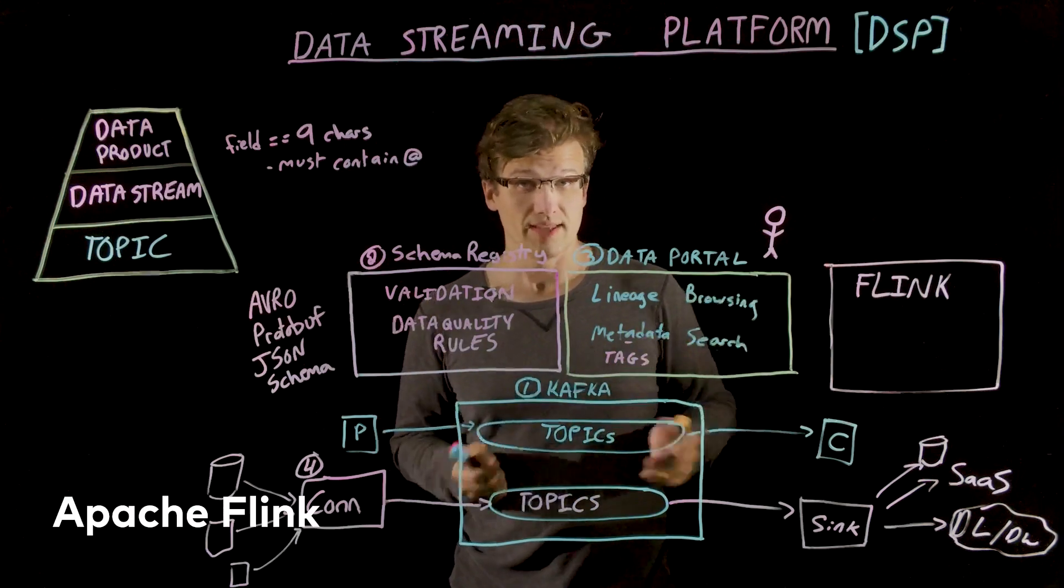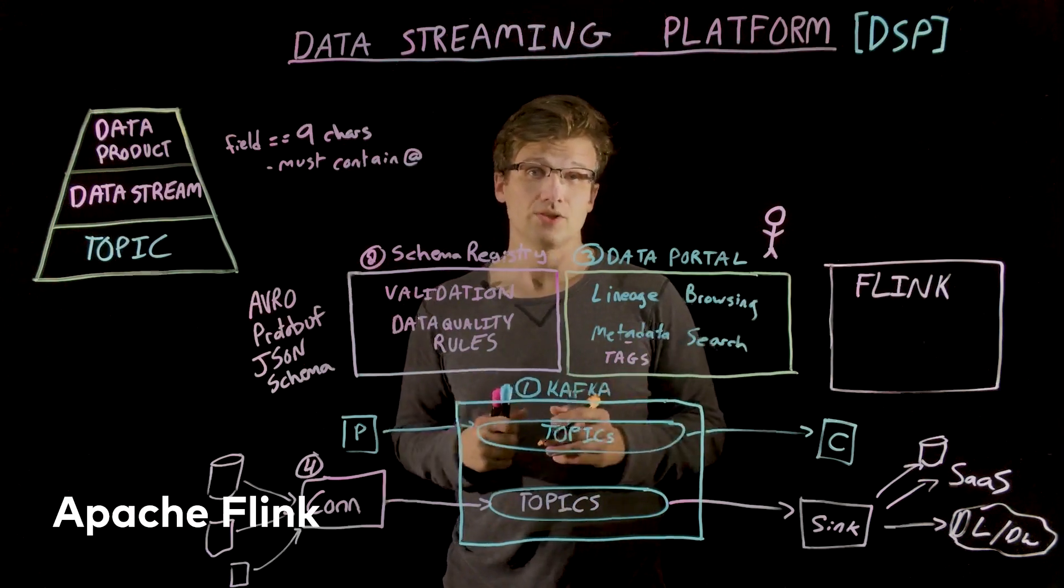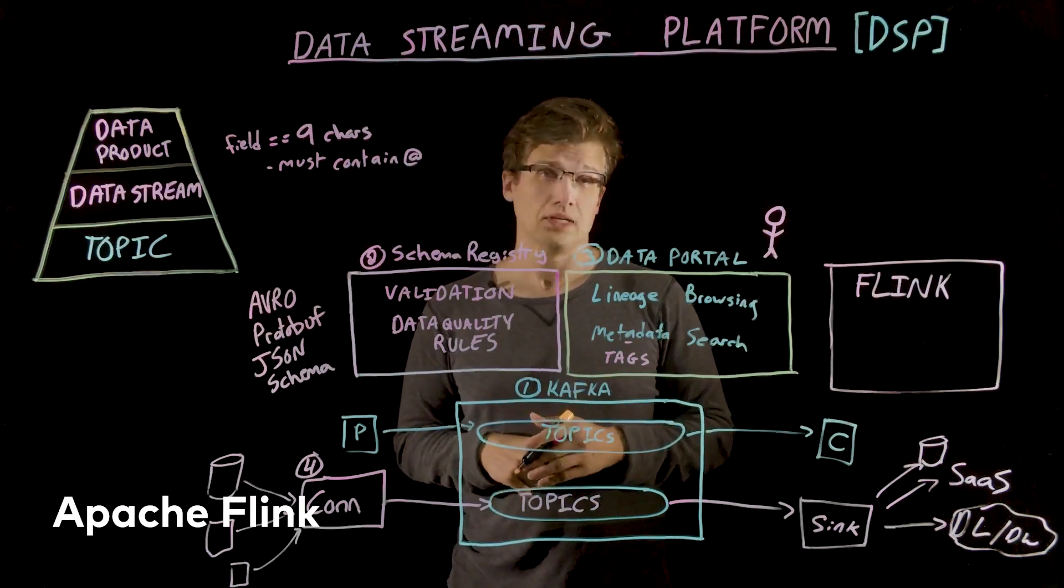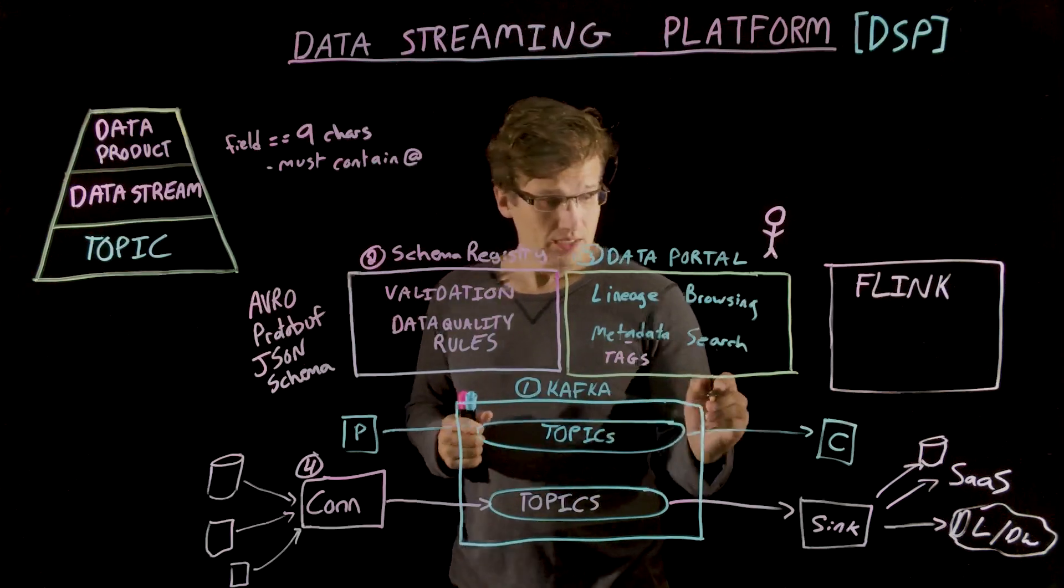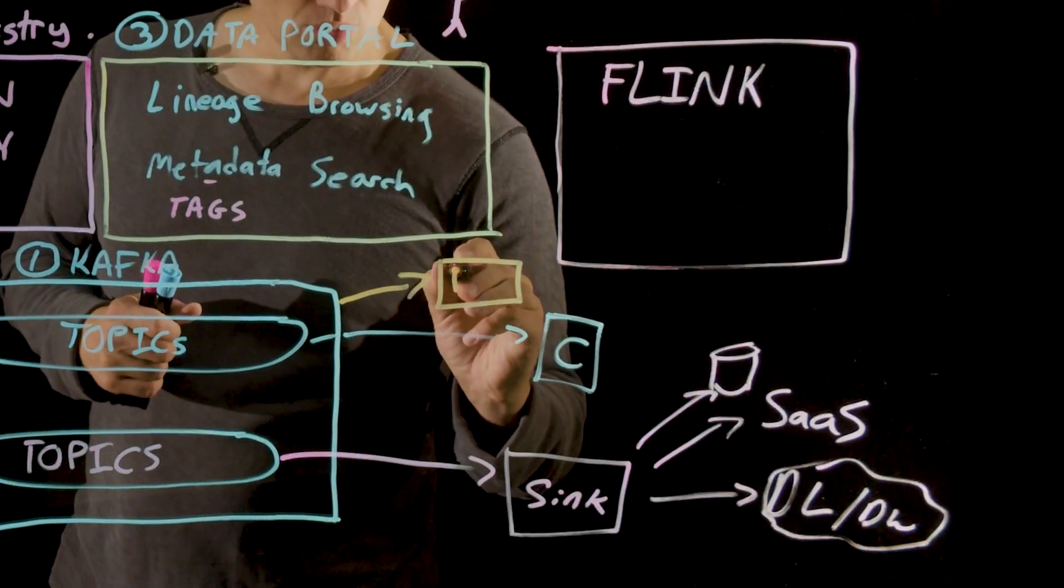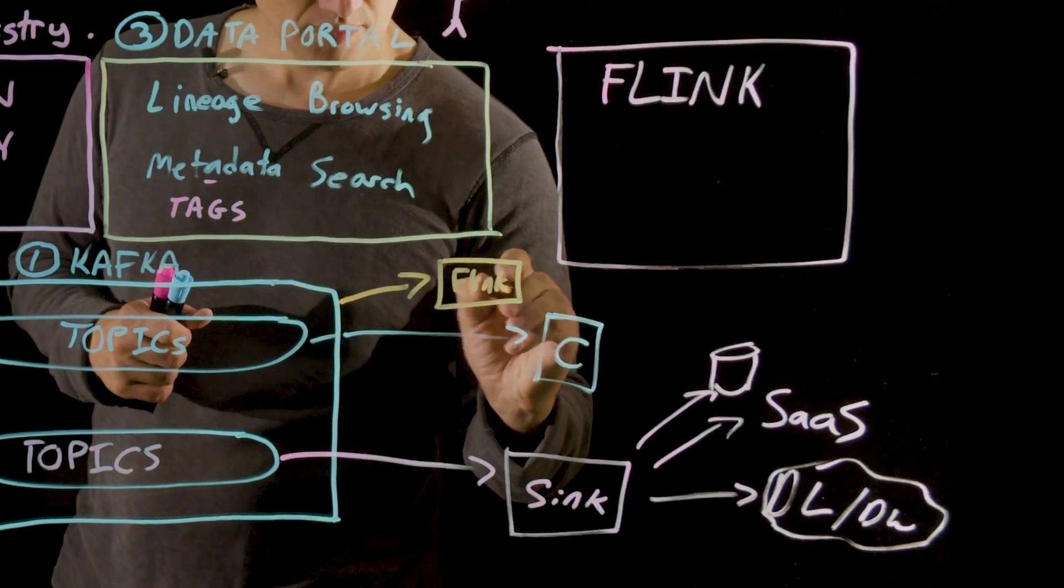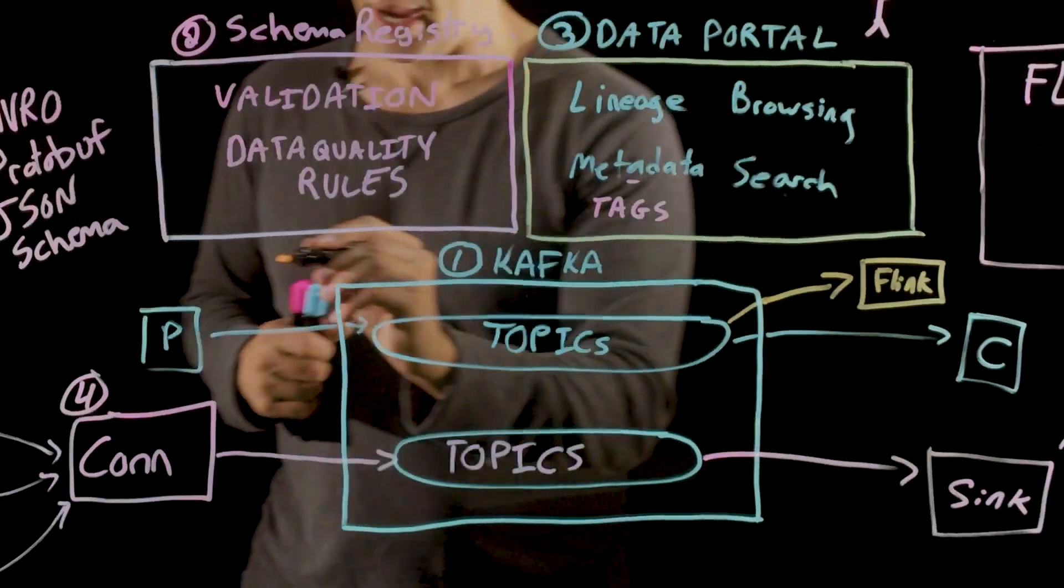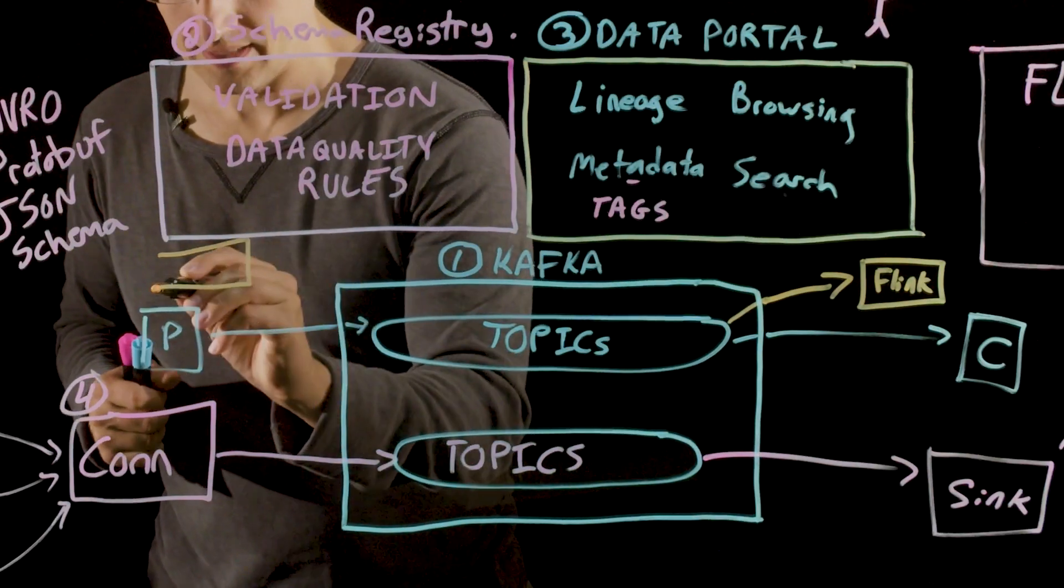Flink makes it possible to execute business logic on your streams, such as transforming events, materializing them to tables, joining them together, and things like building aggregations. You can use Flink both as a consumer of data streams and, of course, also as a producer.